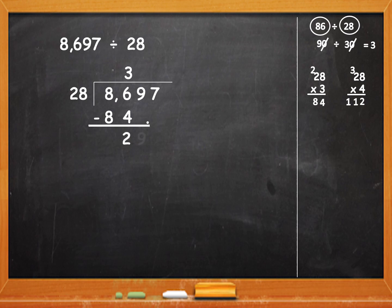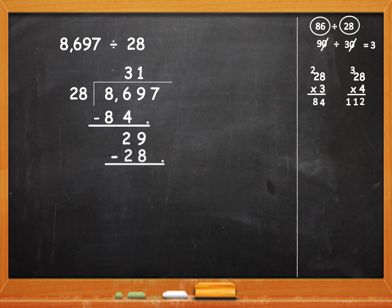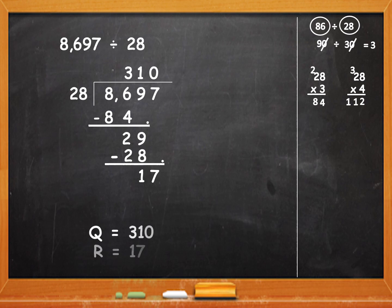Bring down 9. Now divide 29 by 28. That is easy — you know 28 will go only once in 29. Write 1 and 28 ones are 28. When you subtract, the remainder is 1. Bring down 7 and divide 17 by 28, which is not possible because 17 is less than 28. So in the quotient, you put 0 and 17 becomes the remainder. That is the quotient 310, and remainder 17.